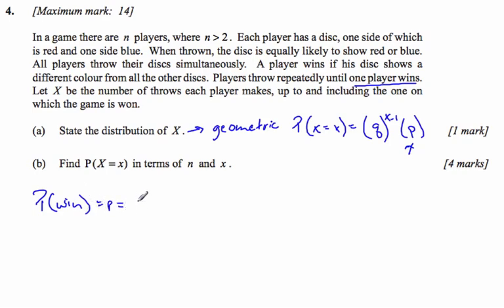It's going to be the probability that I get 1 blue die and n minus 1 red, plus the probability of 1 red and n minus 1 blue.